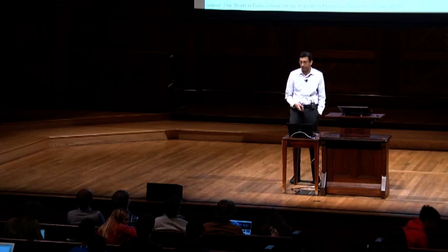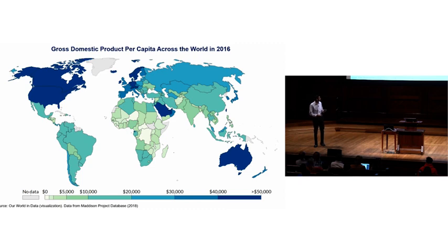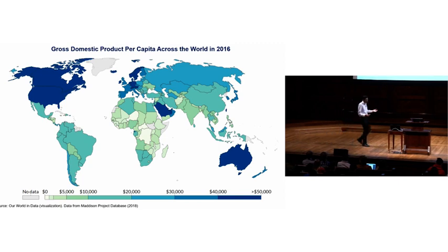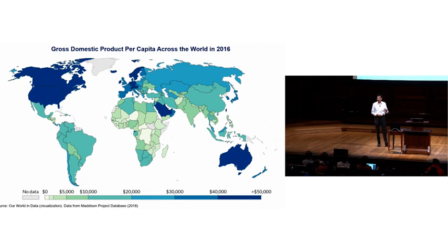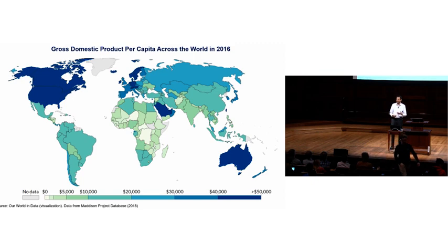In this lecture, we're going to wrap up talking about economic development. I'm going to start with a simple slide showing GDP per capita across the world, where dark blue colors are higher income countries and light blue and white colors represent countries with lower levels of income.